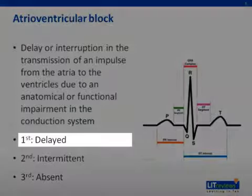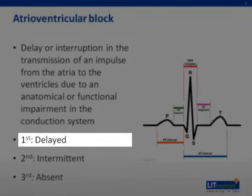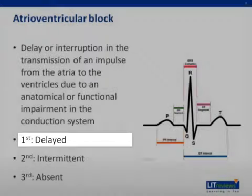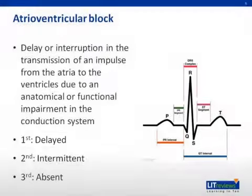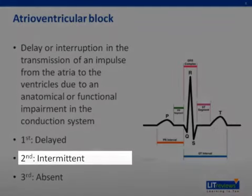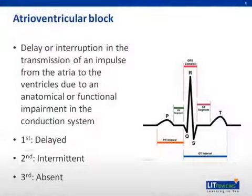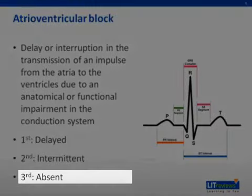In first degree heart block, we are discussing a delay in transmission. In second degree heart block, there is intermittent interruption of that signal. And finally, in complete heart block, or third degree, there is a complete interruption of the communication between the atrium and the ventricles.